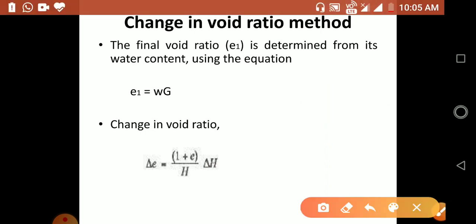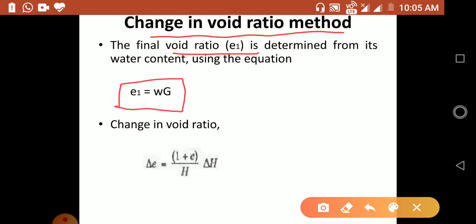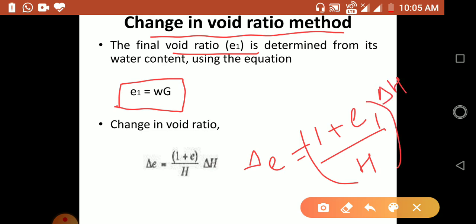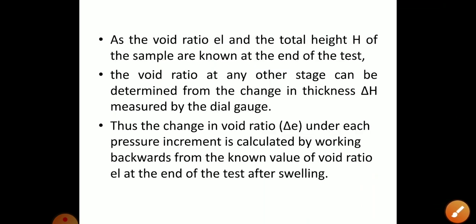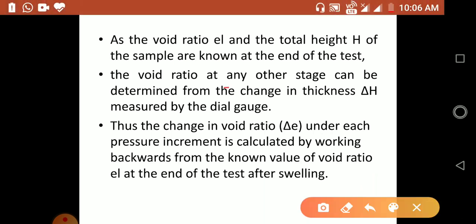The second method is the change in void ratio method. The final void ratio e1 is determined from the water content using the equation e1 = wG. The change in void ratio is: Δe = ((1 + e1) / H) × ΔH. Since e1 and total height H are known at the end of the test, the void ratio at any intermediate stage can be determined from the change in thickness ΔH measured by the dial gauge, working backwards from the end of the test after swelling.